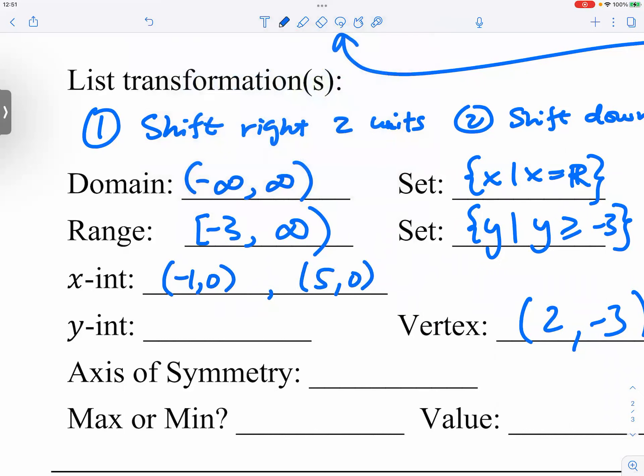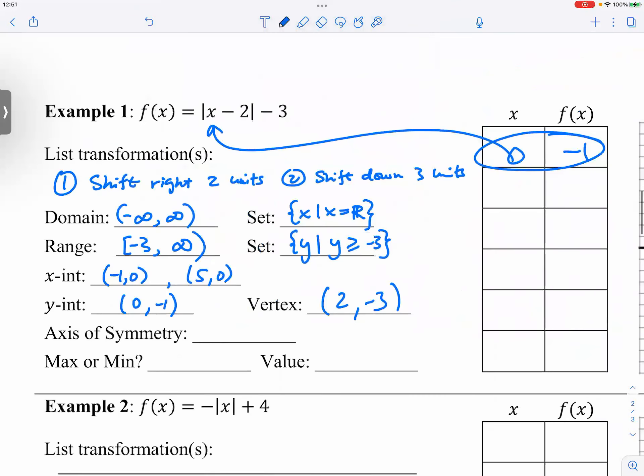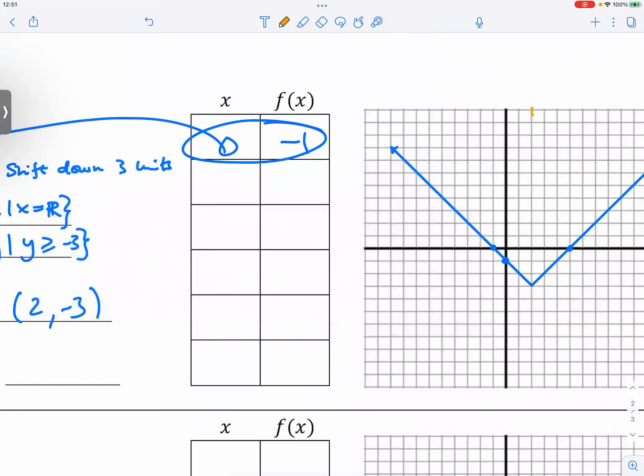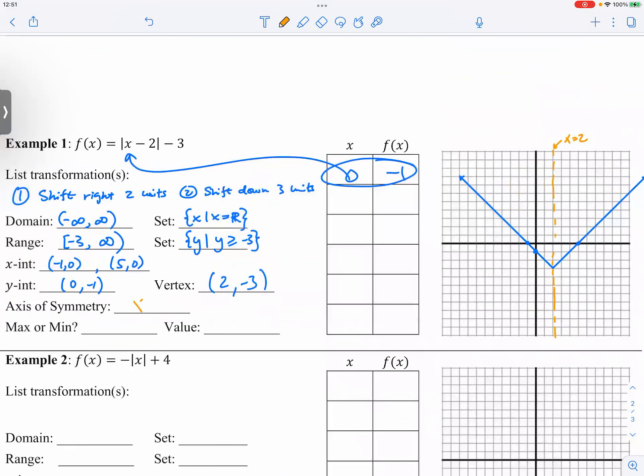Now something new right here. We have axis of symmetry. Can you tell the meaning by the word itself? Axis of symmetry, like the line where... Yeah, so this is the axis of symmetry, and this is x equals to two. It's a line, so you have to express it as a line. And this is x equals to two.